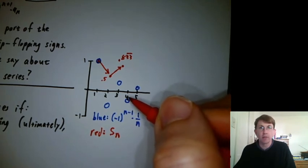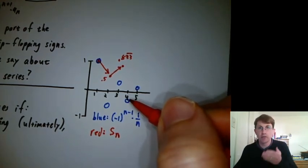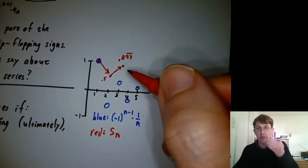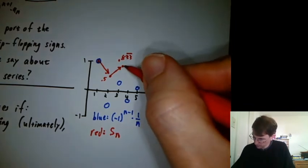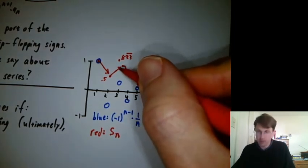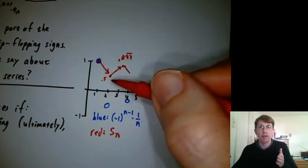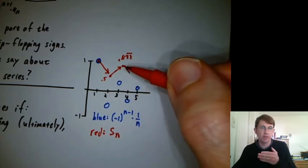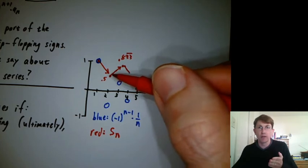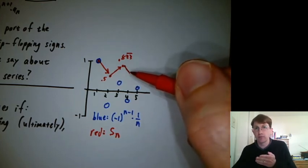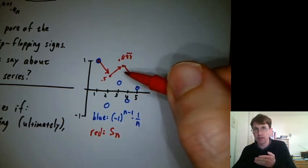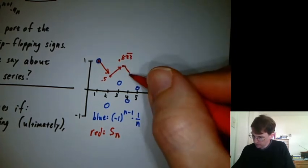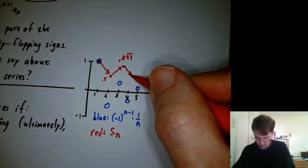And then when I add this blue dot, it's a negative 1 fourth. So I'm going to be moving down by a fourth, which is not as much as I moved up, right? I moved down a half and then up a third, which doesn't quite recover the down a half. Then I went up a third, but then down a fourth. So I'm not going as far down here as I started from there.